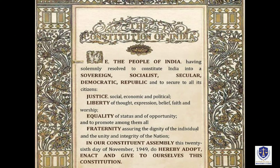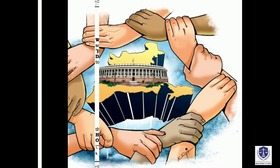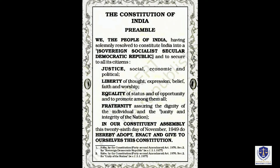In the middle of the preamble, objectives are laid out to be achieved. These objectives aim at maintaining the integrity of India and unity among the citizens through securing justice, liberty, equality, and fraternity.